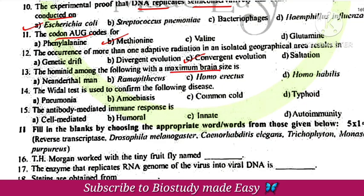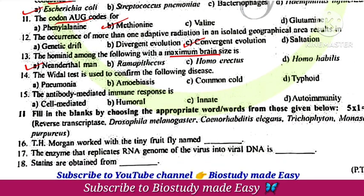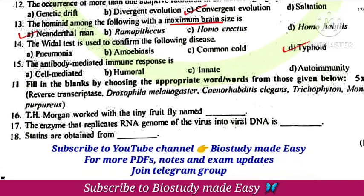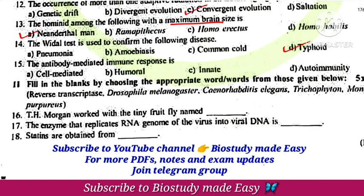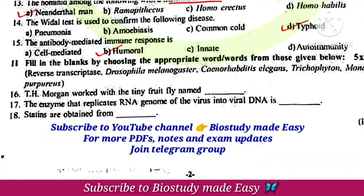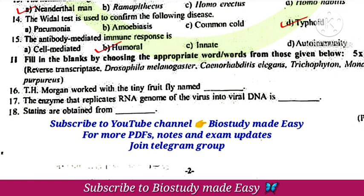The hominid with maximum brain size is Neanderthal man. The Widal test is used to confirm typhoid. Antibody-mediated immune response is humoral immunity.